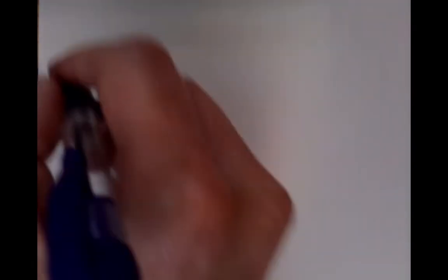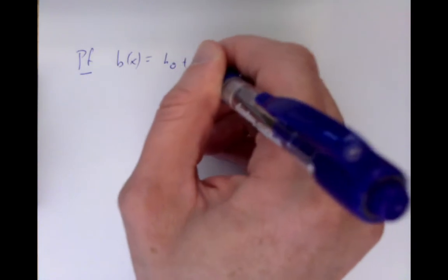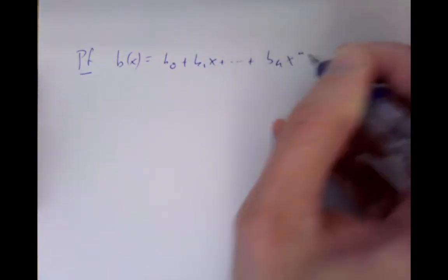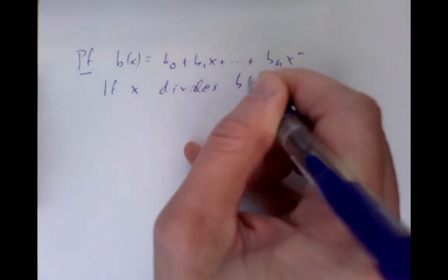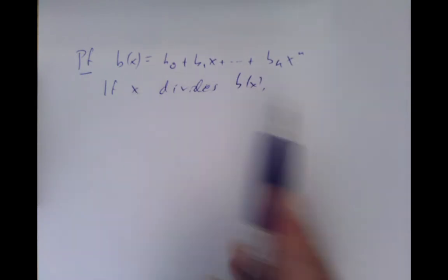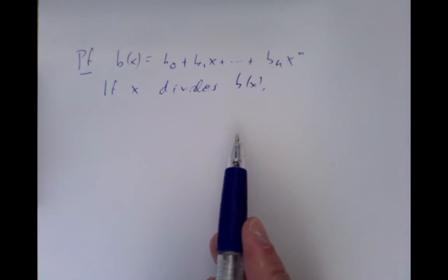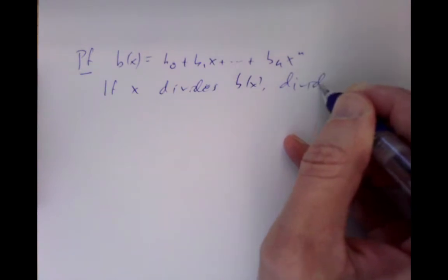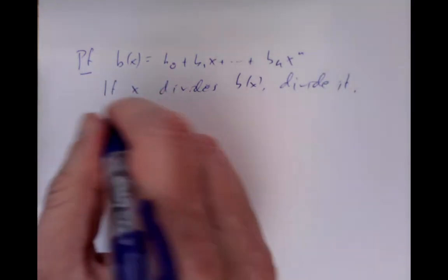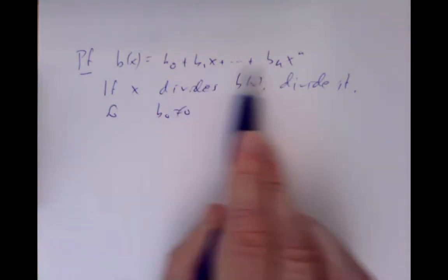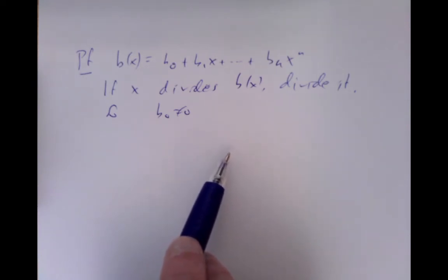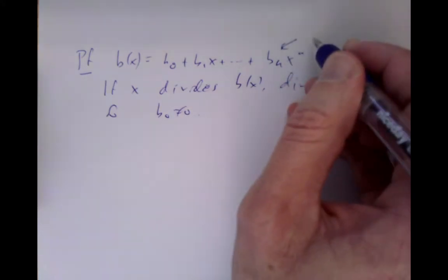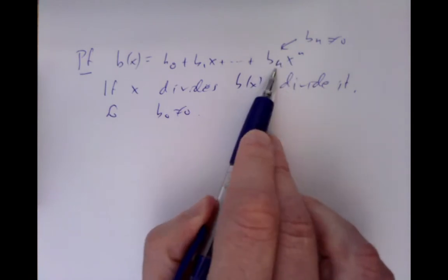Now let's prove Descartes' rule. Take some polynomial b of x equal to b0 plus b1x plus dot dot dot plus bn x to the n with real coefficients. If x divides into b of x, we don't change the positive roots because x is positive for positive roots. So we can divide out any x factors and assume b0 is non-zero, and of course the highest term bn is also non-zero.